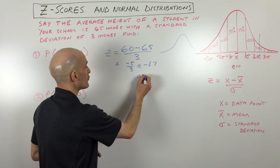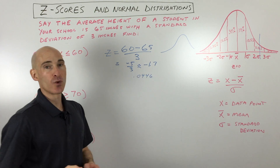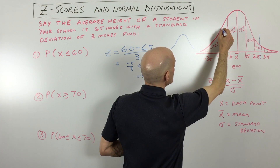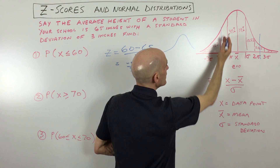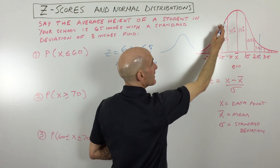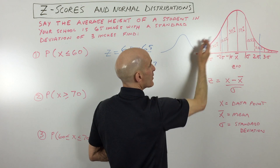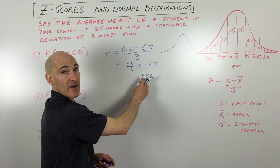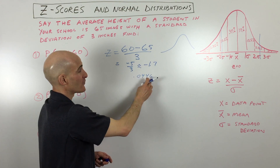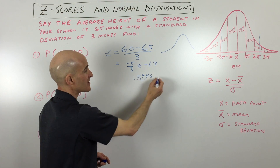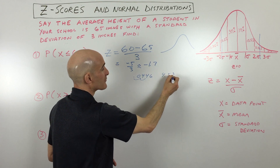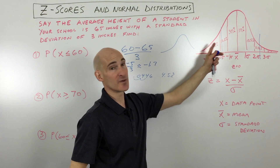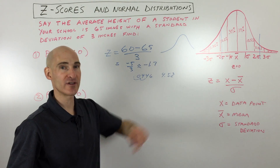So this is 0.0446. If we go to negative 1.7 on the curve, the area to the left of that line — this part of the curve — is about 4.5%. So 0.0446, converted to a percentage, is about 4.5%. The probability or chance would be 4.5% that somebody would be shorter than that height.